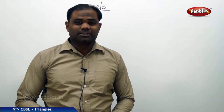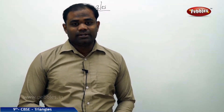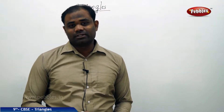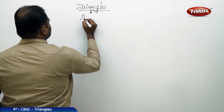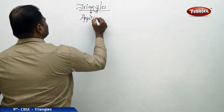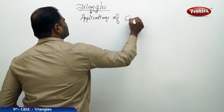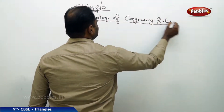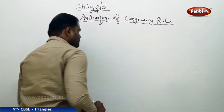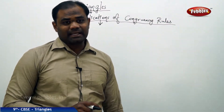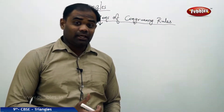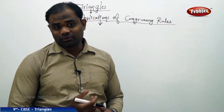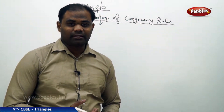Now that we have learnt about congruency rules connected with congruency of two triangles, let's apply the rules in real life. Today's session is about applications of congruency rules in solving mathematical problems. The congruency rules SSS, ASA, SAS, RHS, and AAS are the various types we have discussed till date. So let's apply them to problems.